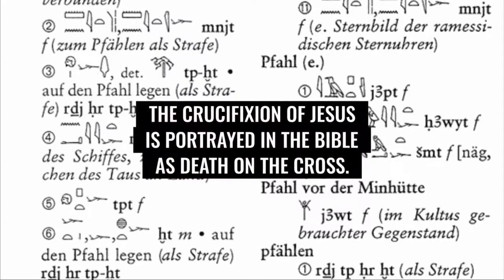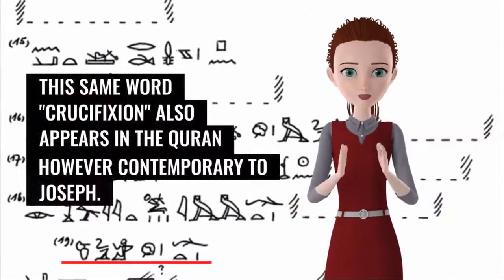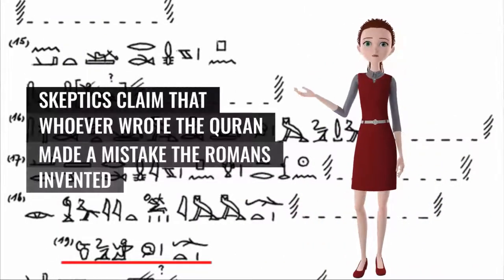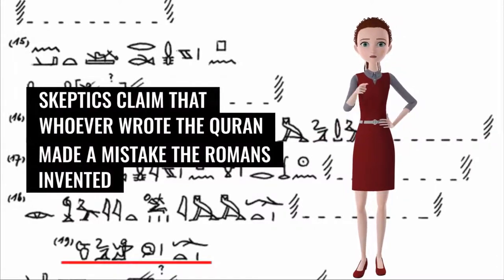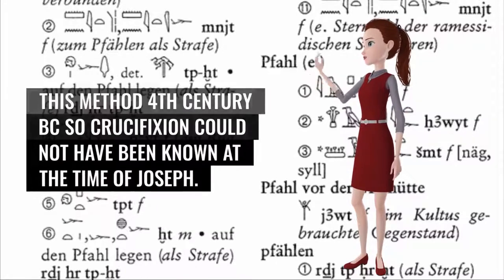The crucifixion of Jesus is portrayed in the Bible as death on the cross. This same word, crucifixion, also appears in the Quran, however, contemporary to Joseph. Skeptics claim that whoever wrote the Quran made a mistake. The Romans invented this method in the 4th century BC, so crucifixion could not have been known at the time of Joseph.